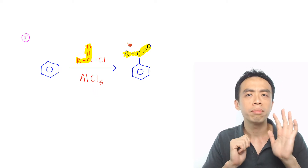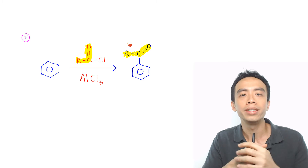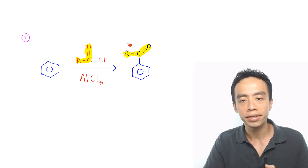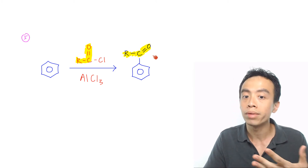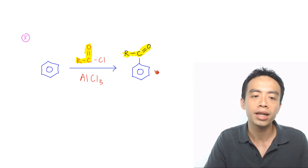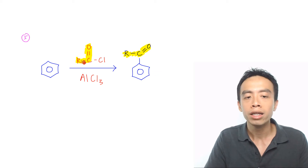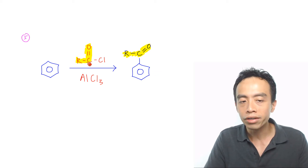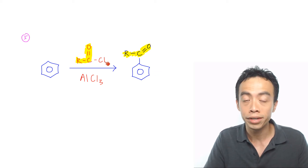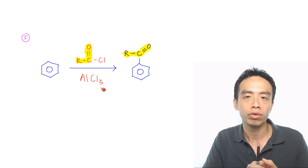Must-know reaction number 5 for benzene is the Friedel-Crafts acylation of benzene to form alkyl benzene. This is done using an acyl chloride — an RCO group bonded to a Cl group — with AlCl3 as catalyst.